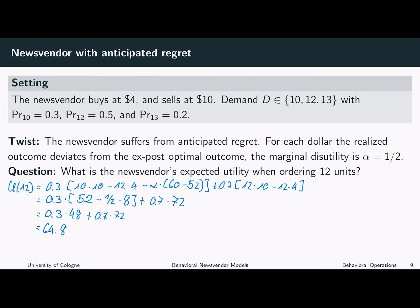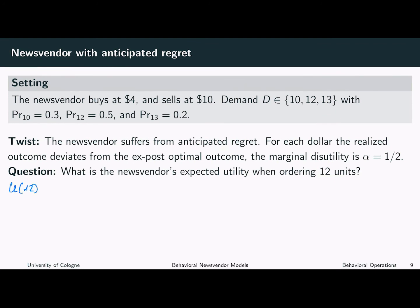This is the case if the newsvendor does not observe excess demand. Now we will turn to the case in which she does observe it. If the newsvendor does observe excess demand, we have to consider three possible demand realizations. With probability 0.3, the demand is 10 and we do the calculation from before. The profit is 52 minus 1.5 times 60, which is the profit associated with the ex-post optimal order decision, minus 52.